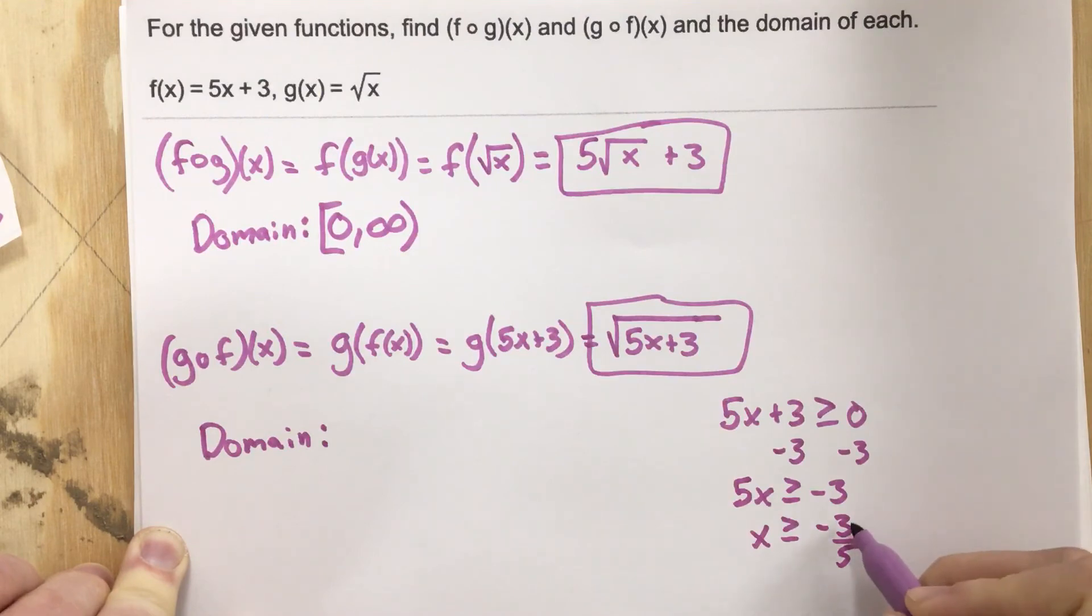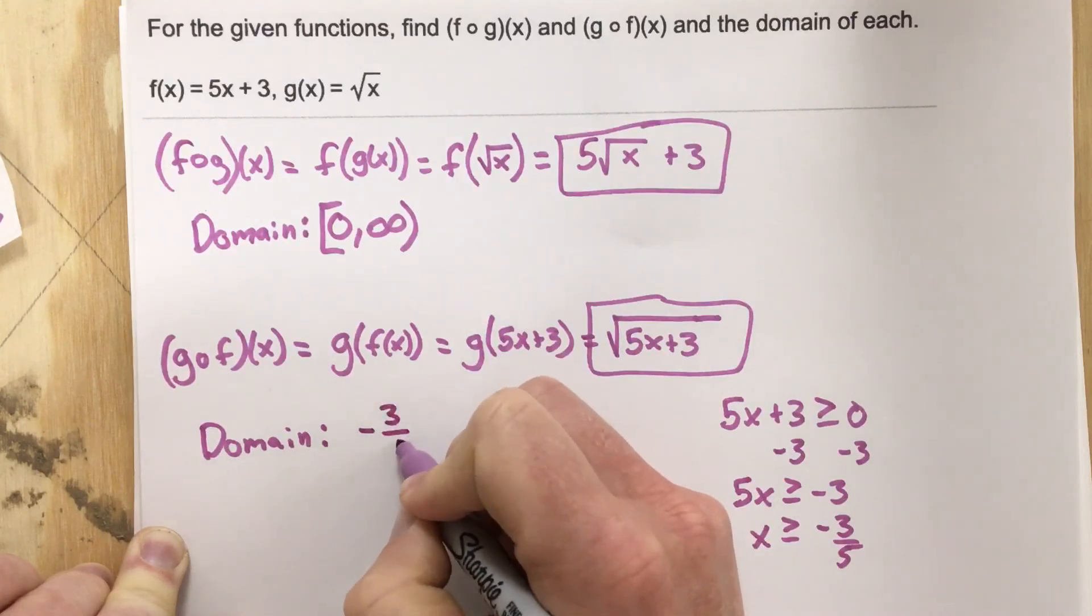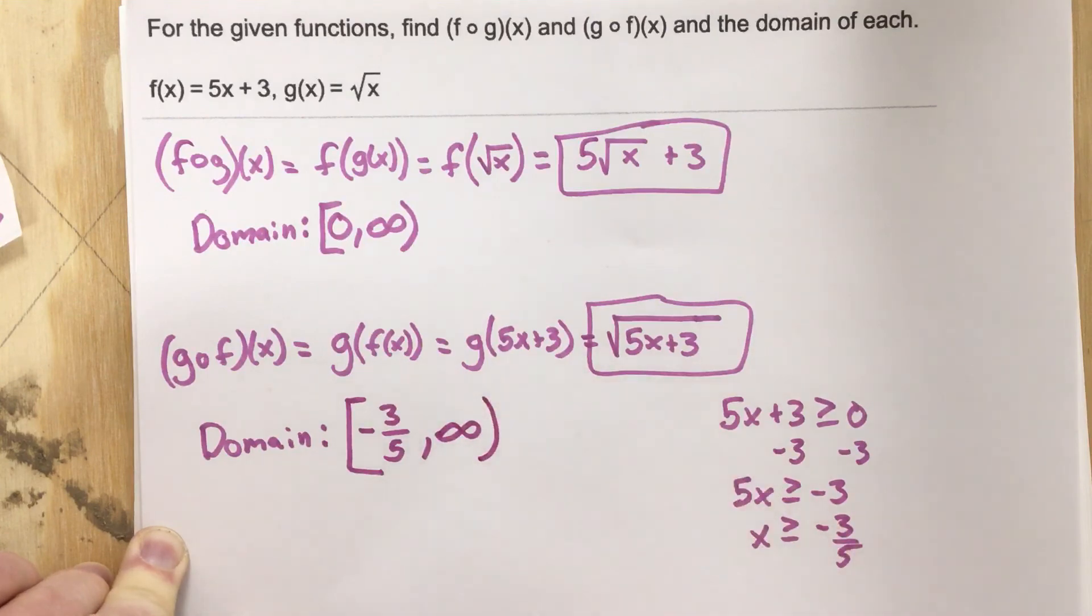So negative 3 fifths is the smallest x value for our domain that we can use. The domain is negative 3 fifths to infinity. And that's how you do f of g of x and g of f of x.